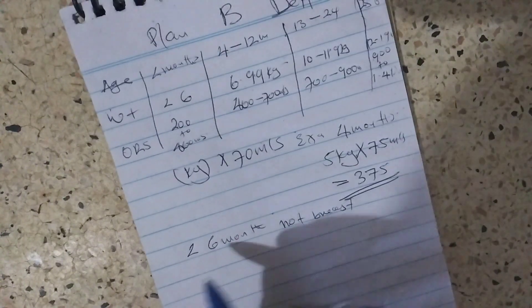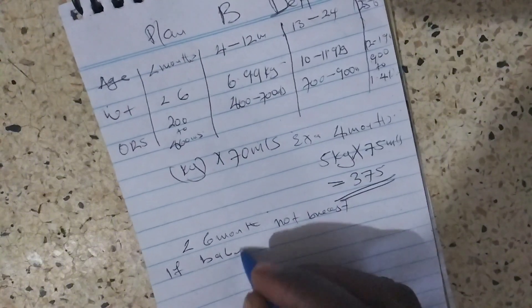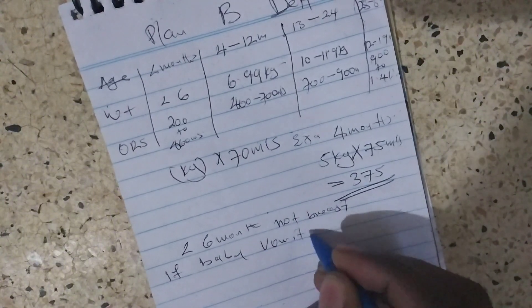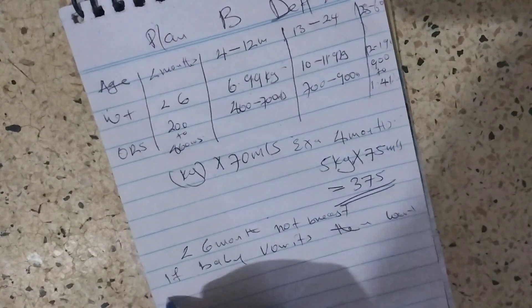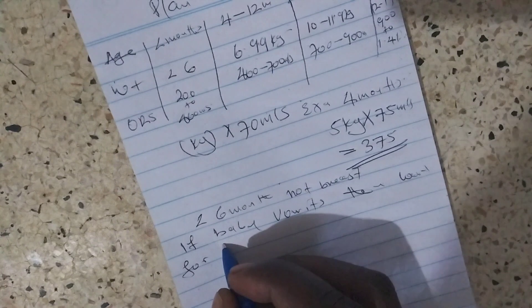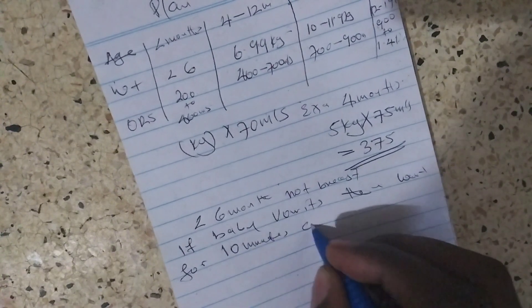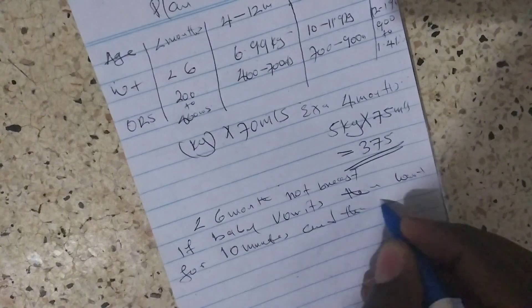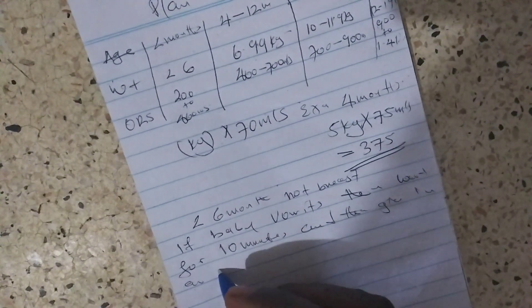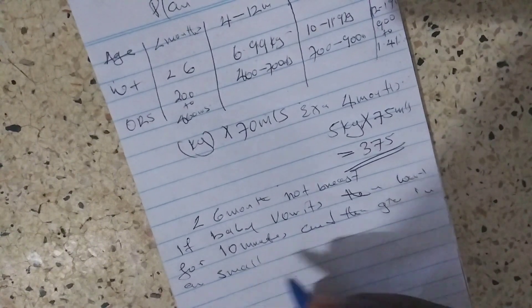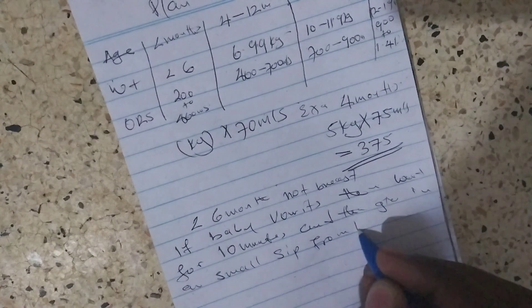If the baby vomits, then you need to wait for ten minutes and then give in a small sip from the cup.